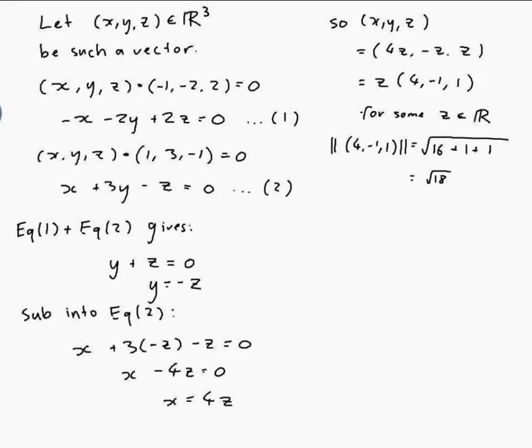So if I do 1 on root 18 times 4, minus 1, 1 that should give me a unit vector. So xyz should be equal to 1 on root 18 times 4, minus 1, 1.